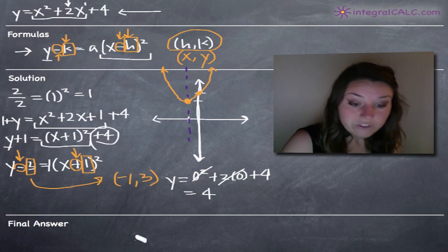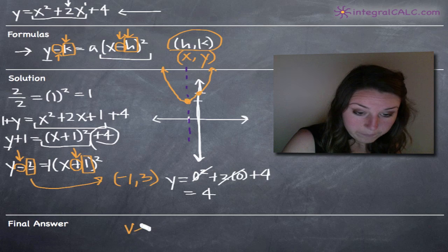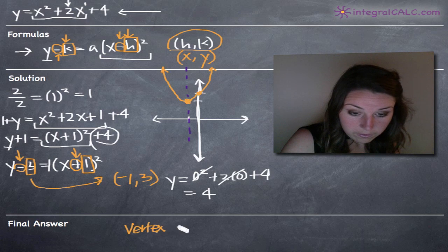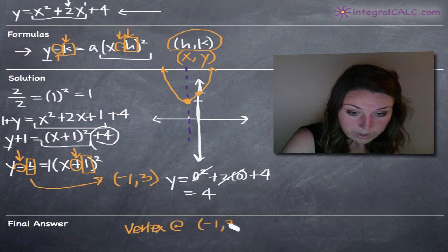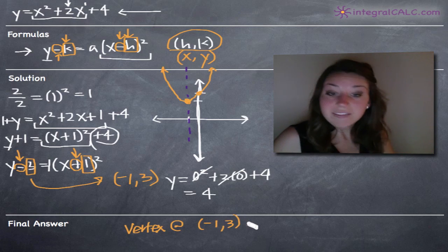So you would just draw the graph and then you'd write vertex at negative one, three, and that would be it. That's how you sketch the graph.